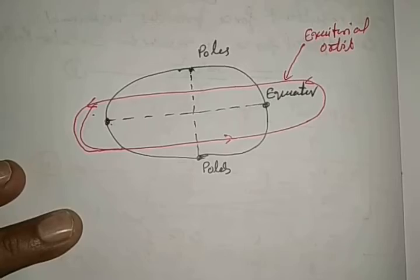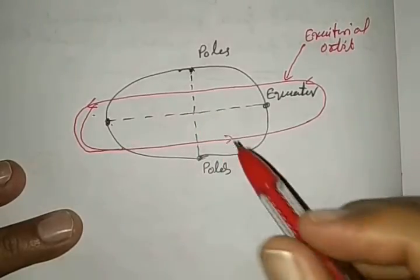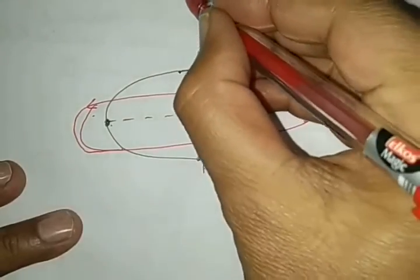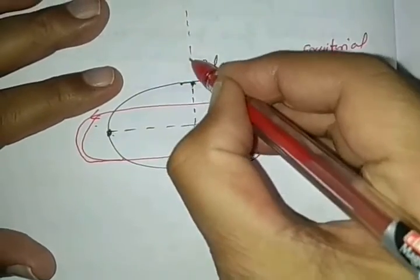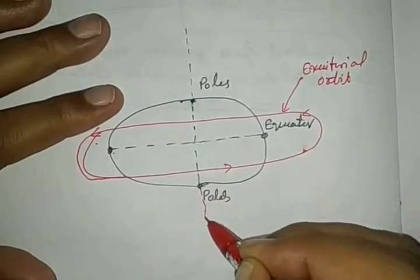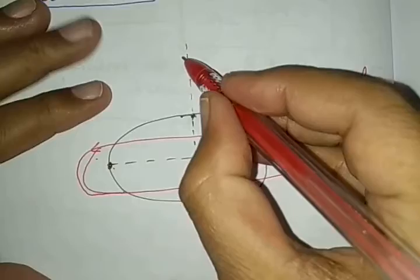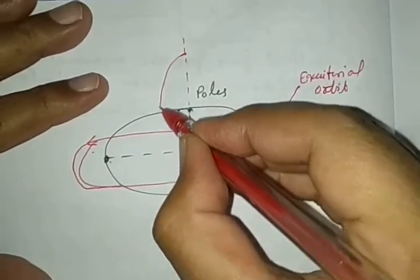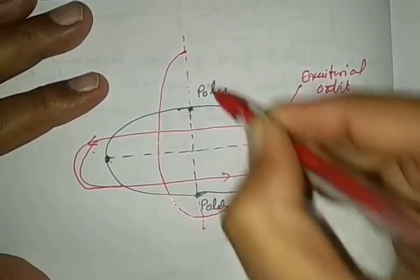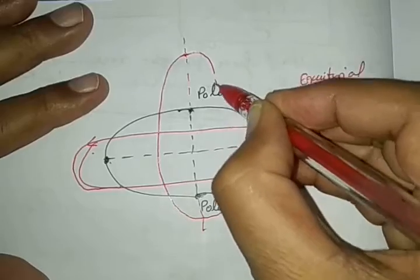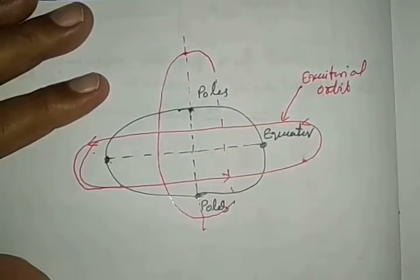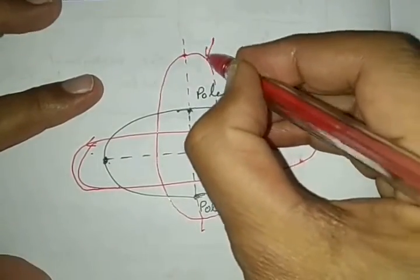Now see very carefully. Normal to this, there is one more orbit, 90 degrees to the equatorial. This is called polar orbit.